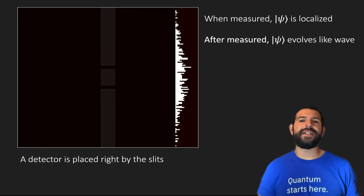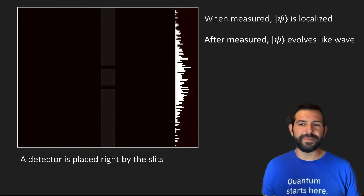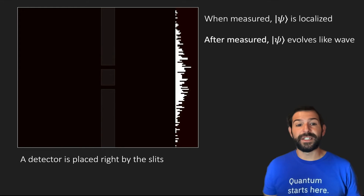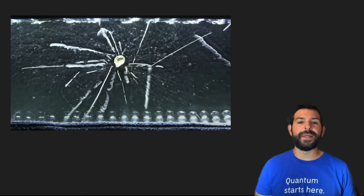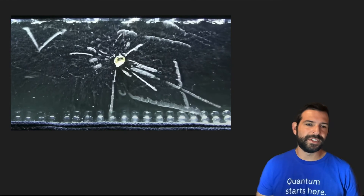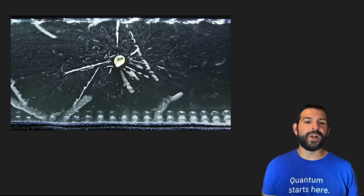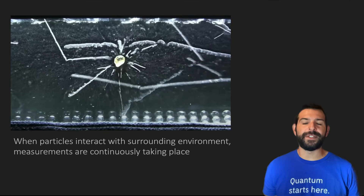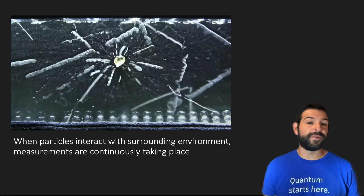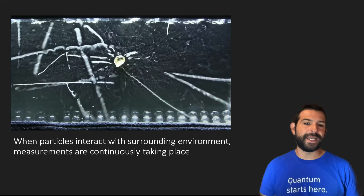You might say: wait a second — here we're saying that the particles always behave like waves, but I've seen experiments where particles actually behave like localized objects traveling through space. Like, for example, in an experiment of a radioactive element in a cloud chamber clearly emitting alpha particles and electrons. Well, the caveat here is that these particles are constantly interacting with molecules and photons in the environment around them, which basically constitutes performing a continuous measurement of the position of that particle across space.